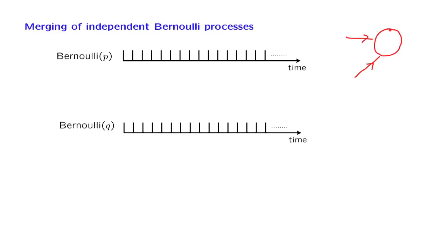Here's a precise model. We have two streams that correspond to Bernoulli processes with some parameters each, p and q respectively. Each one of these processes receives arrivals at certain times that we indicate by crosses, and similarly for the second process. We assume that these two processes are independent.